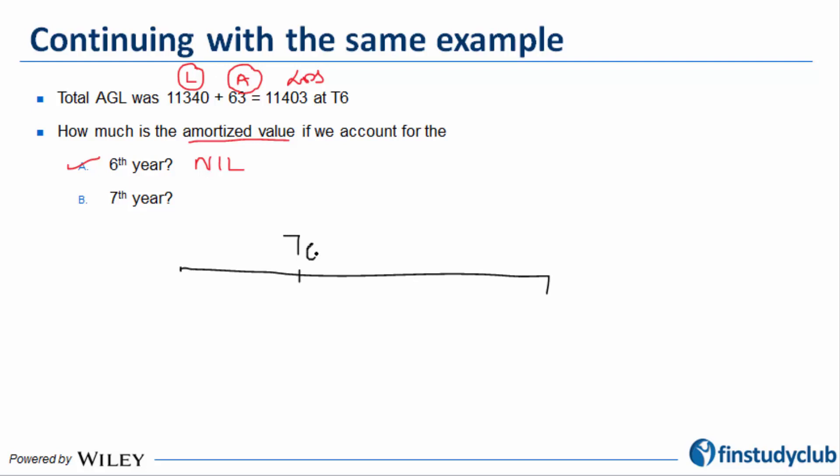Let's understand how this would be amortized. I'm going to talk about the seventh year now. For the seventh year, the AGL was 11,403. If I'm doing the accounting for the seventh year, I'm standing here, so I'm going to look at the opening values of my PBO and plan assets: 6,567 and 23,639. By the way, these were the closing values of the sixth year, but now I'm talking about the seventh year, so this becomes the opening.